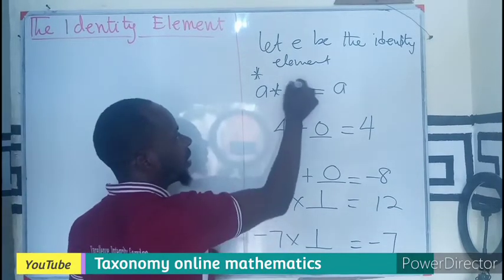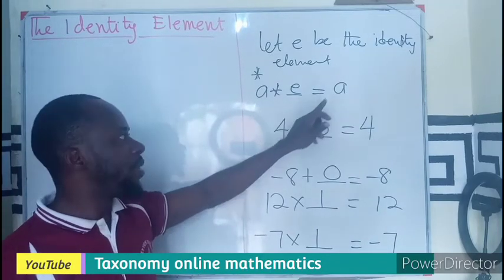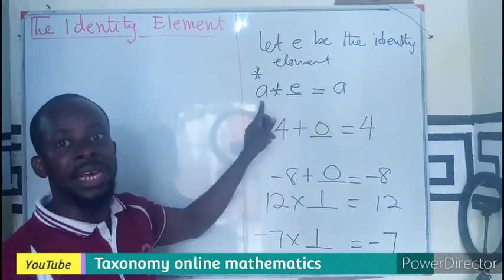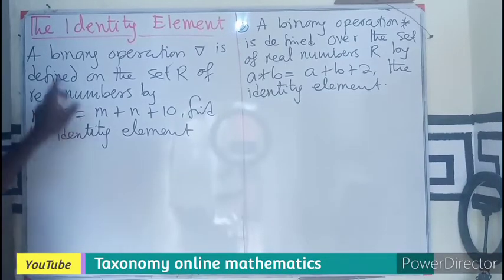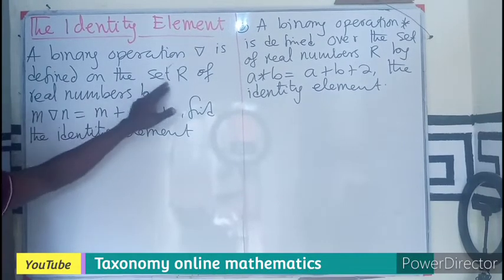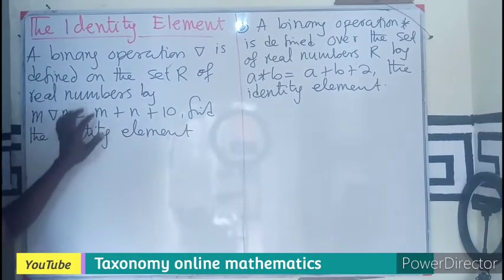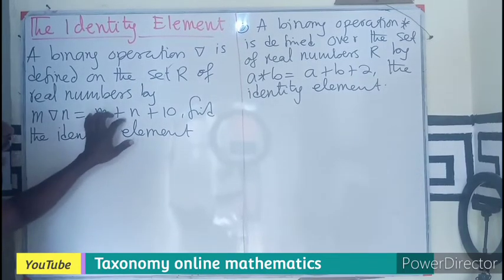So it means that if I have A star E, I should be expecting the answer to be A, regardless of the operator definition. So the binary operation star is defined on the set of real numbers by M operator N equals to M plus N plus 10.